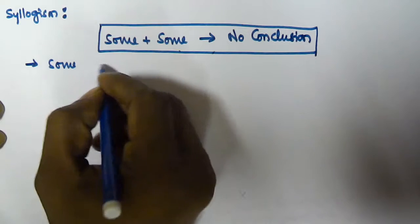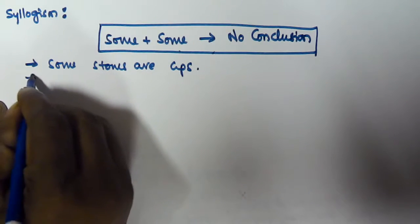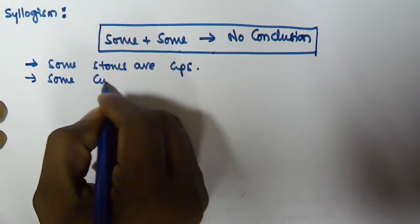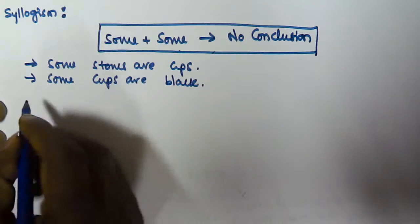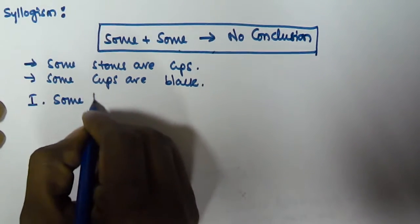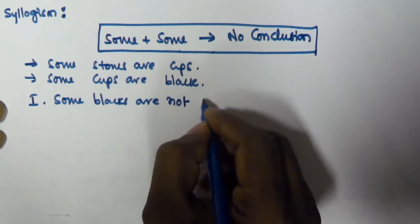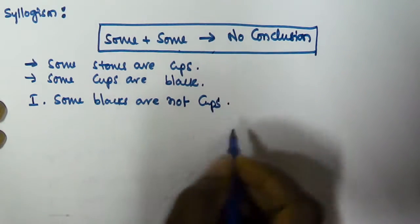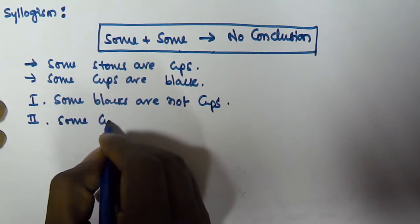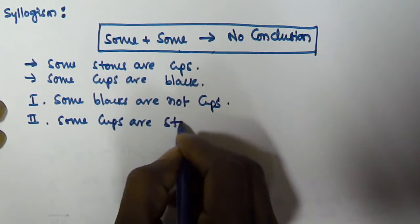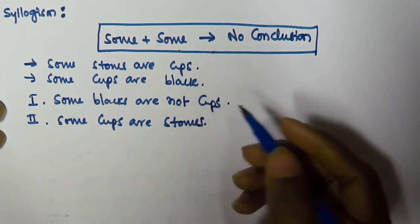Let us consider two syllogism statements. The first one is: 'Some stones are cups.' The second syllogism given is: 'Some cups are black.' The first conclusion given is: 'Some blacks are not cups.' And the second conclusion given is: 'Some cups are stones.'